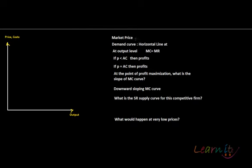We are looking at the short-run supply curve of a profit-maximizing firm. Suppose the firm is a price taker in the product market and the market price is given by P dash. What would be the demand curve for this firm? It would be a horizontal line at P dash.